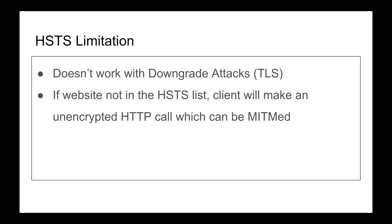For example, if I'm at Starbucks and visit husseinbanking.com for the first time by just typing the URL — which establishes an HTTP call — a shady attacker on the same network can do ARP poisoning, pretend to be the network router, forward my requests to themselves, and redirect me to a malicious site instead. At that point, I'm compromised.